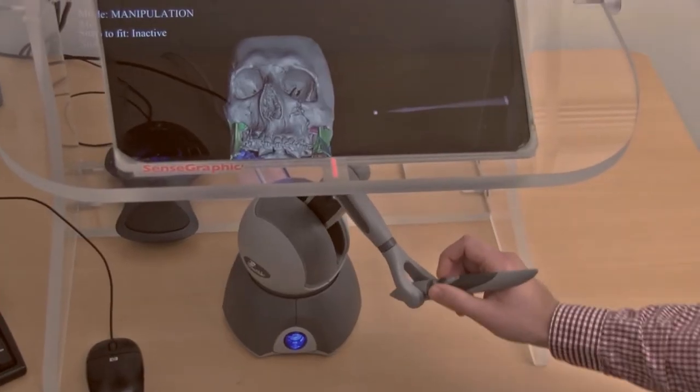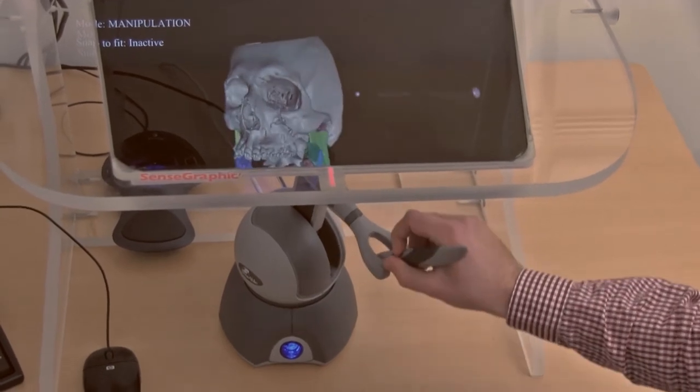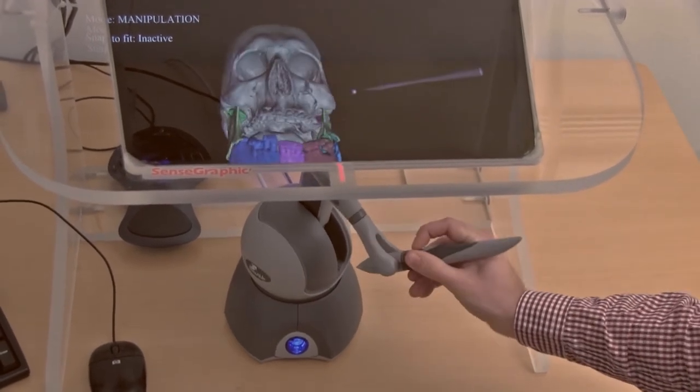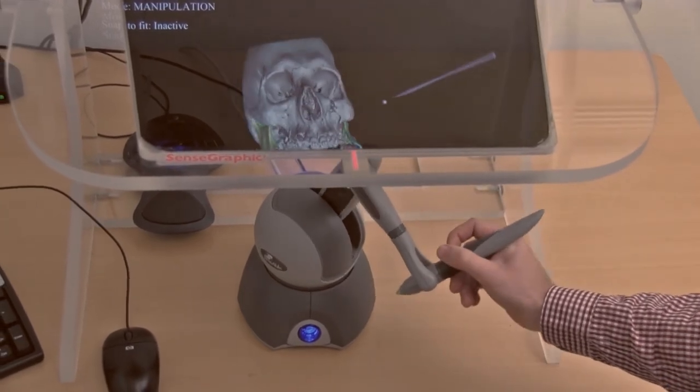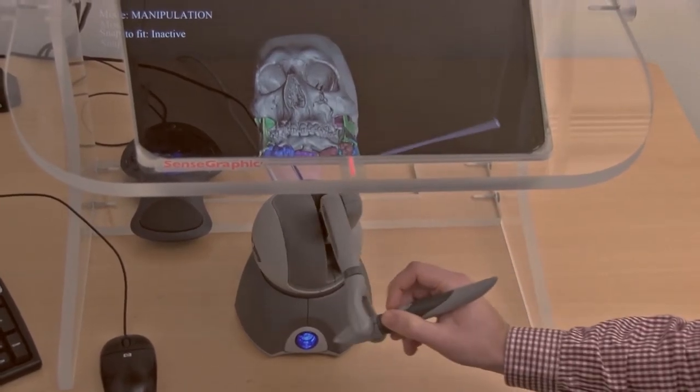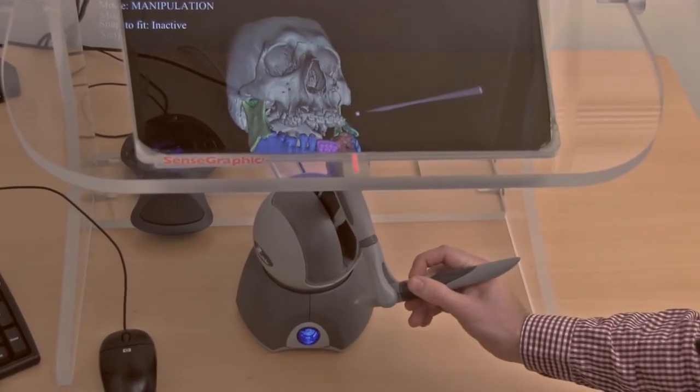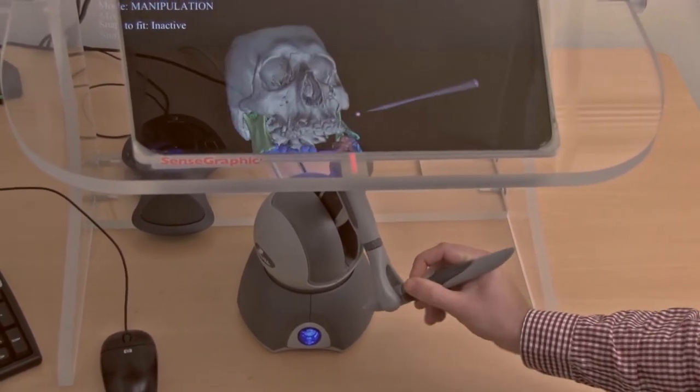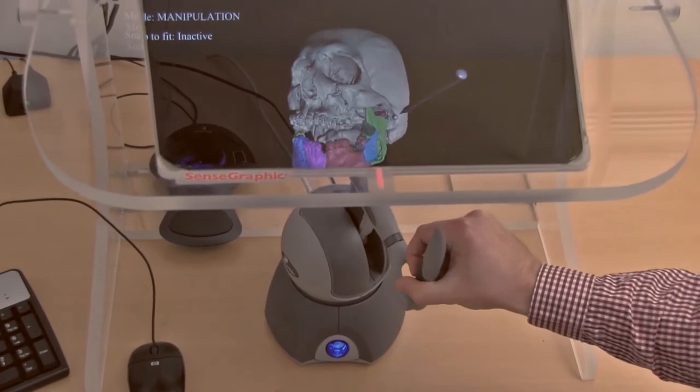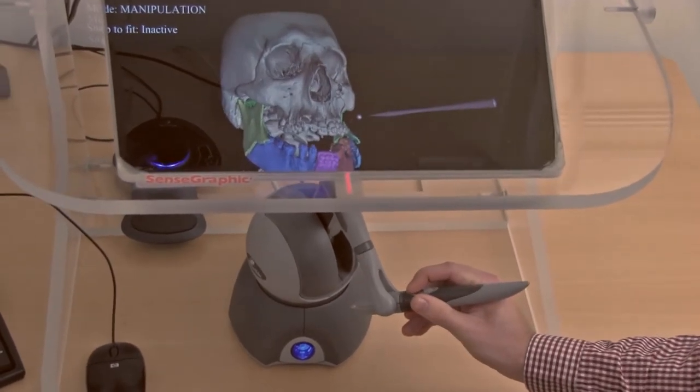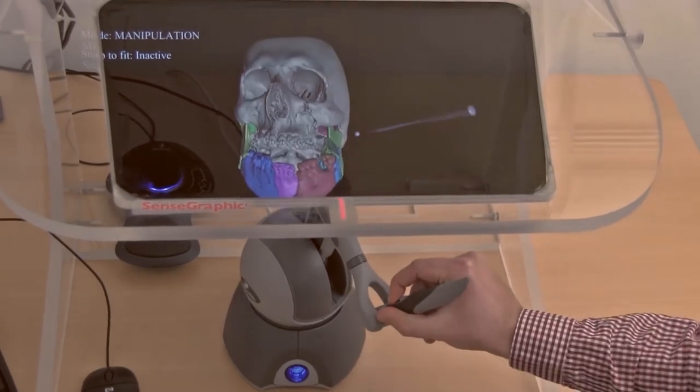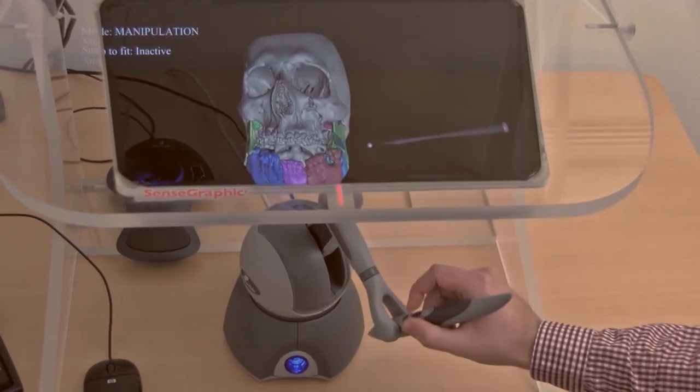So basically what we're seeing here is a 3D model derived from computer tomography images from a patient with a complex fracture to the jaw. And when you think of it, this is really a 3D puzzle that needs to be solved by the surgeon ahead of surgery. So a big part of the planning step is to figure out how these pieces really should fit together.